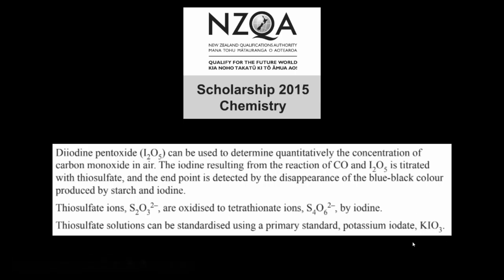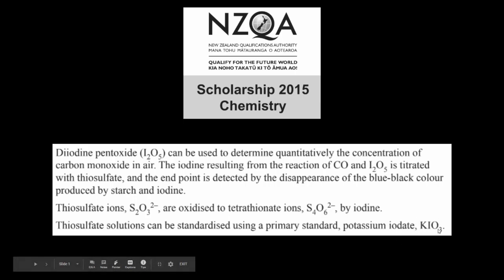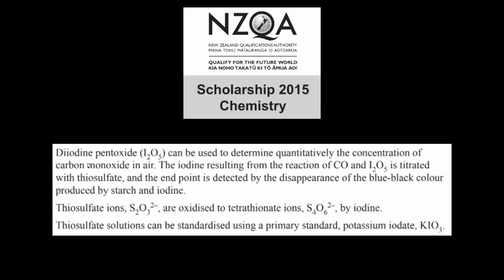So we're going to work backwards now, beginning with determining the concentration of this primary standard, and applying the stoichiometric ratios to convert the moles of potassium iodate to moles of thiosulfate, and converting that amount to a molar amount of iodine. And then lastly, converting that mole amount of iodine and applying stoichiometry to determine the number of moles of carbon monoxide. From there, it's just a short step to determining its concentration.